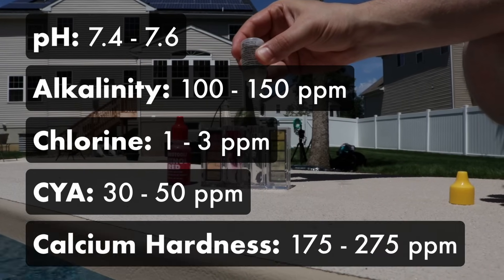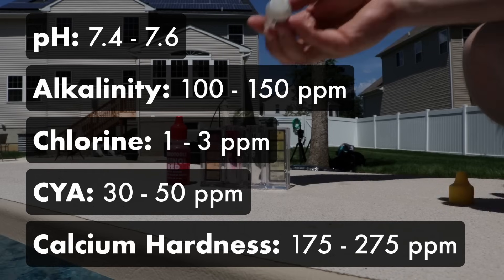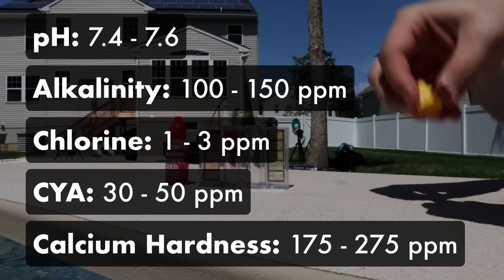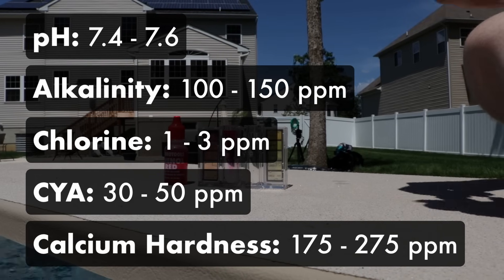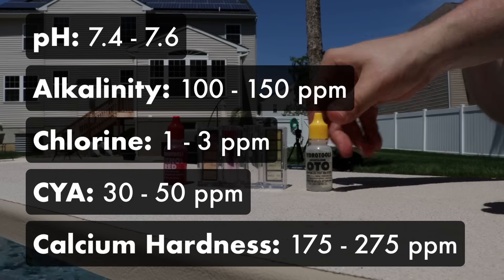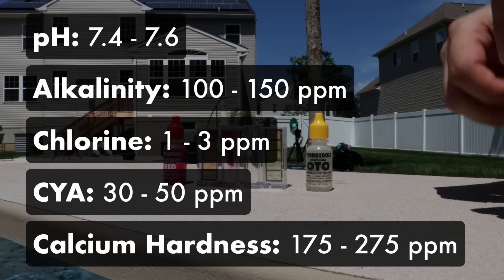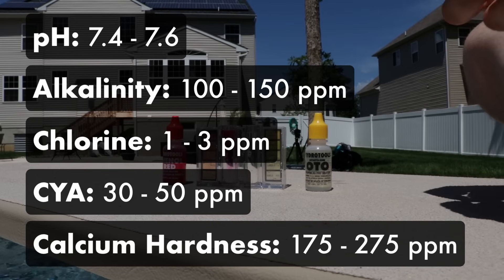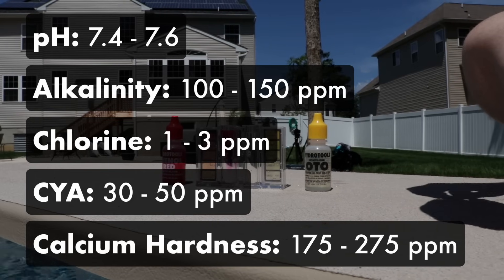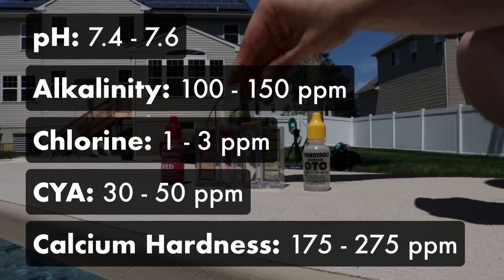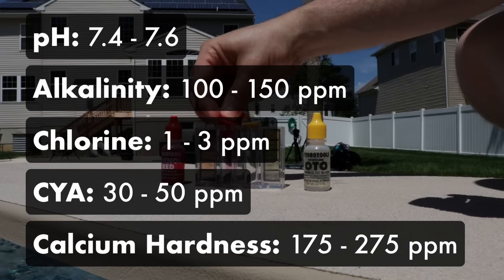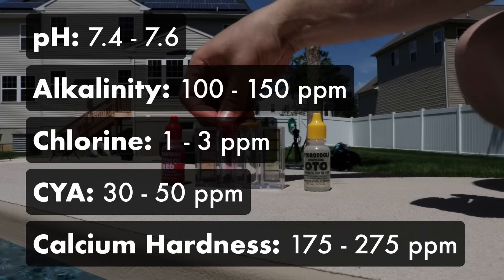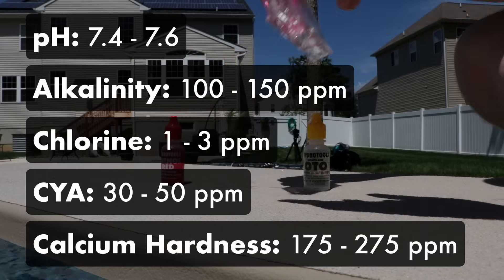And calcium hardness, which should be between 175 and 225 parts per million for vinyl liners or fiberglass pools, or between 200 and 275 parts per million for concrete or plaster pools.